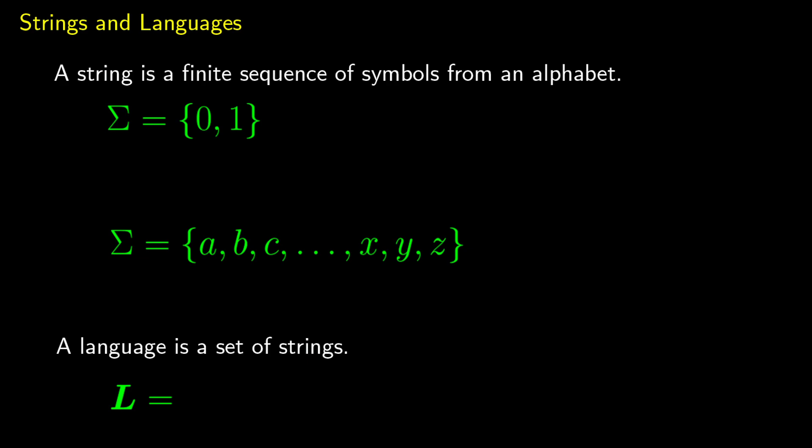We'll begin our journey into formal grammar by talking about strings and languages. In this video we'll cover everything to do with strings. A string is just a finite sequence of symbols from an alphabet. We usually define an alphabet with capital Sigma. So if we say Sigma is the set {0, 1}, this means any string will be a combination of zeros and ones — the binary alphabet — giving binary strings.